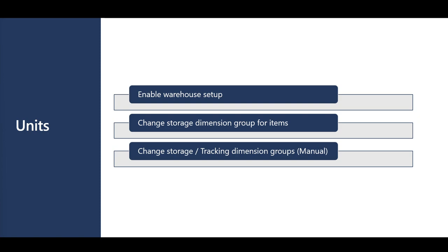In this session we'll review two main features. The first one is Enable Warehouse Setup, which you may use to migrate warehouses that are not using the advanced warehouse management process since the initial configuration. The second feature is Change Storage Dimension Groups for Items, which you may use to migrate standard items to advanced warehouse management items — including changing the Storage Dimension Group, Unit Sequence Group, and assigning reservation hierarchies. We'll also discuss prerequisites and best practices for changing storage and tracking dimension groups manually on the item level.